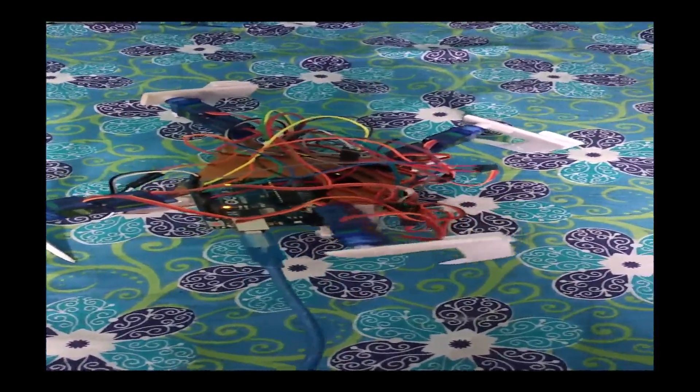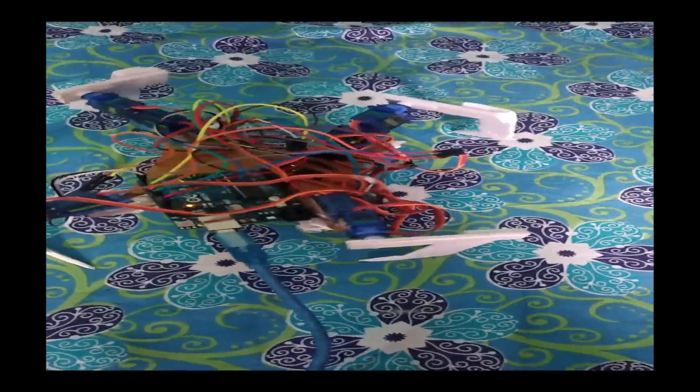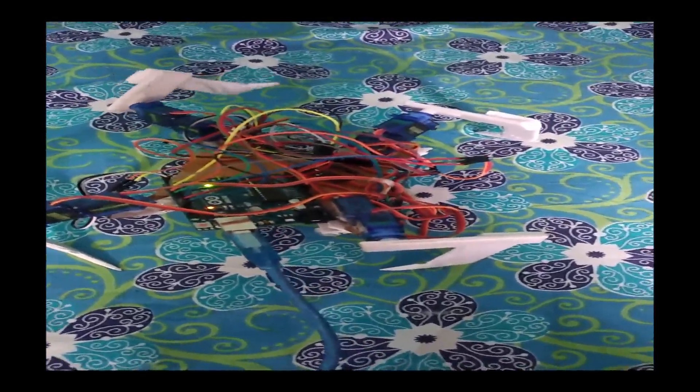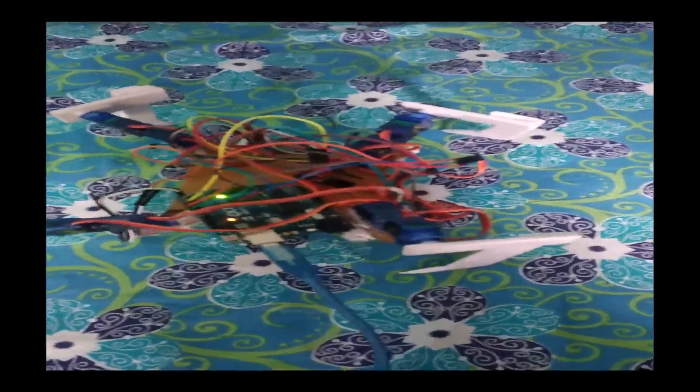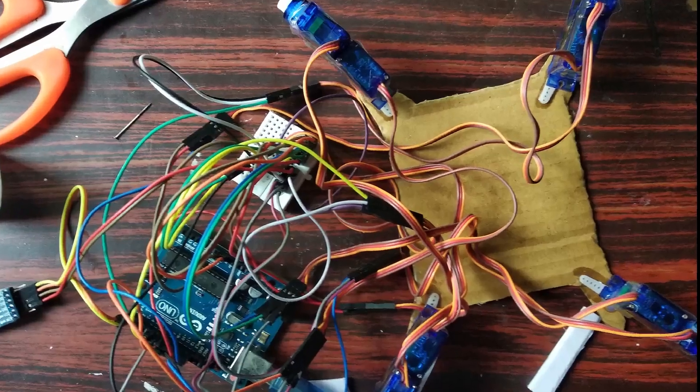So it is a homemade spider robot. It is controlled by Arduino microcontroller, and in turn the legs are controlled by eight servo motors, two servo motors per leg. The motion of the robot is controlled with the help of a Bluetooth module HC-05.